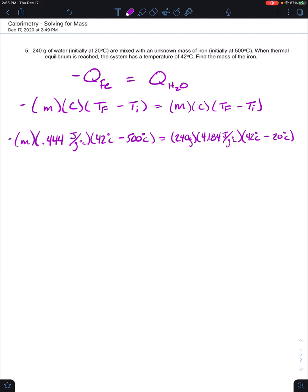We're going to combine as many like terms as we can in our equation. We're going to bring down negative M, and we're going to multiply 42 minus 500, that's negative 458, times 0.444, and you'll get negative 203.352, and you can cancel out the degrees Celsius units. So now you're in joules over grams,